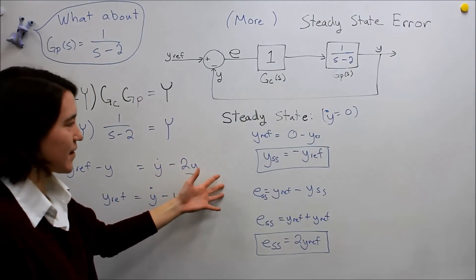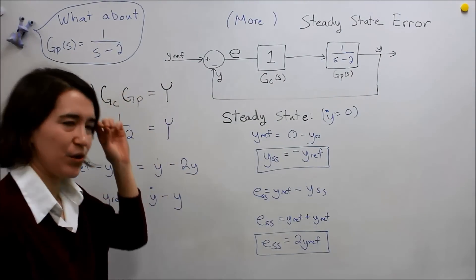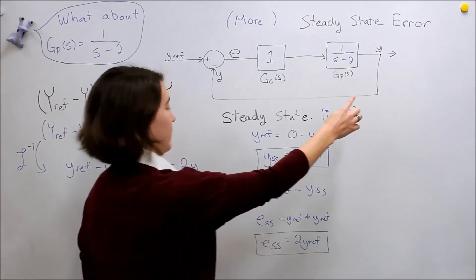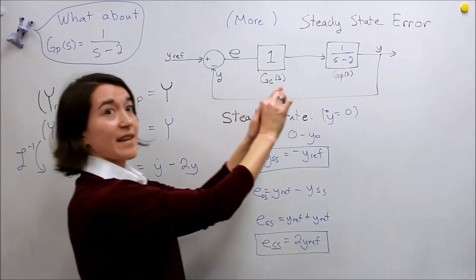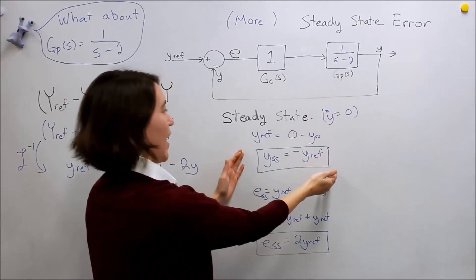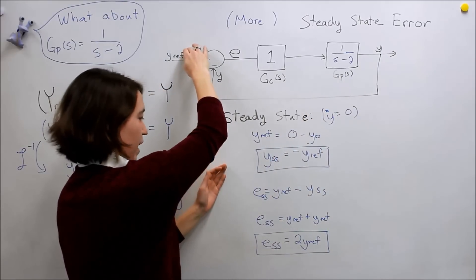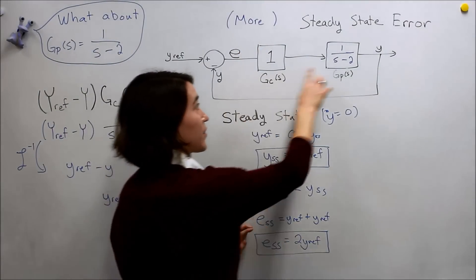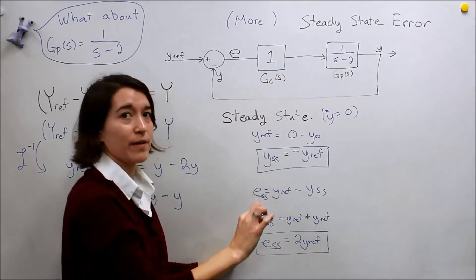This is essentially, if you happen to start at exactly, your output is exactly negative y ref, and it stays at that point, so from the beginning it's this value, then your error would be exactly this value, and your system would stay at that point.